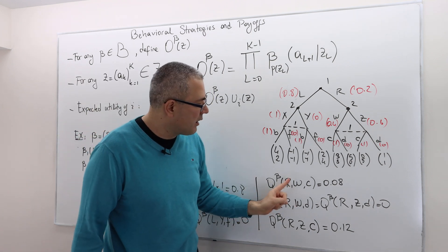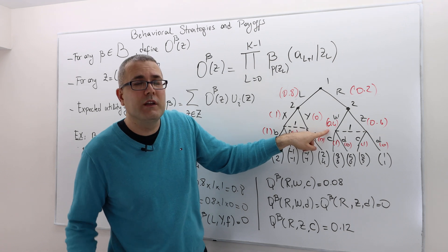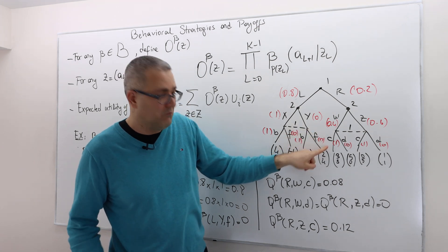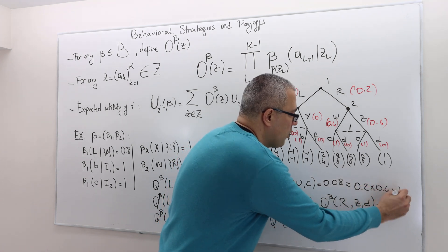What about RWC? 0.2 times 0.4, 0.08 times 1, 0.08. This is nothing but 0.2 times 0.4 times 1.